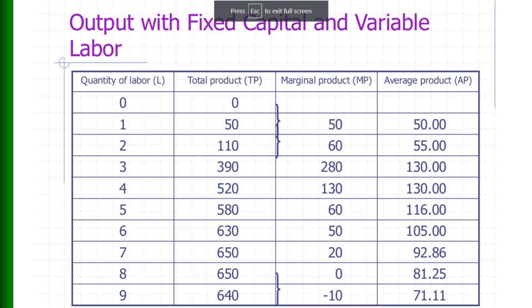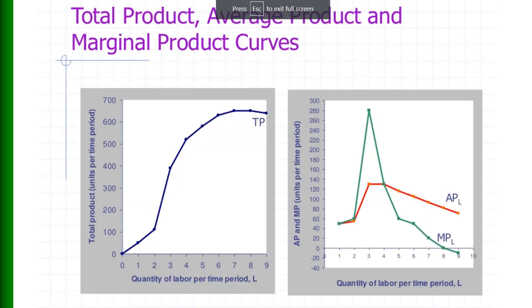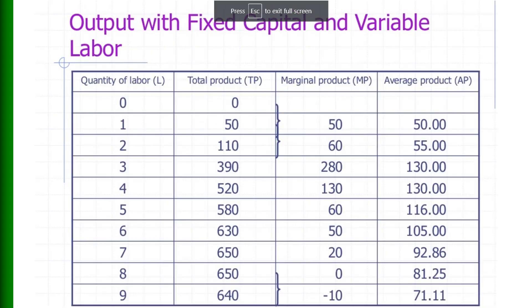Here you see output with one fixed input — capital — and one variable input — labor. The first column shows the variable amounts of labor, the second column shows total product, the third column shows marginal product, and the fourth column shows the average product of labor. These curves are the geometrical representation: the total product curve, the red curve is the average product of labor, and the green curve shows the marginal product of labor.